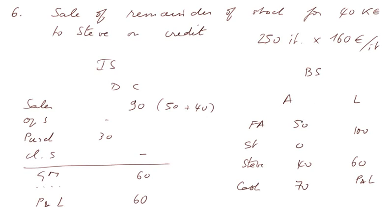And the balance sheet: fixed assets 50, no more stock, a debtor owing us money, and cash 70 on the asset side. Liabilities: capital 100, P&L 60, and we owe nothing to Mary, our supplier of goods.